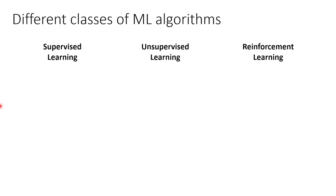Machine learning algorithms can perform a variety of tasks, and depending on the type of task one can group these algorithms into different classes. Here I'm going to highlight three major classes: supervised learning, unsupervised learning, and reinforcement learning.